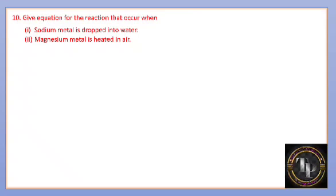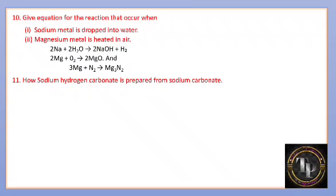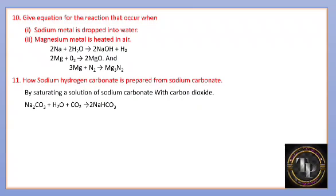Write the equation for reaction when sodium metal is dropped into water: sodium hydroxide is formed with liberation of H2. When magnesium metal is heated in air: magnesium oxide (white powder) is formed; magnesium also reacts with N2 in air to form magnesium nitride. How is sodium hydrogen carbonate prepared from sodium carbonate? By saturating a solution of Na2CO3 with carbon dioxide: Na2CO3 + H2O + CO2 → 2NaHCO3.